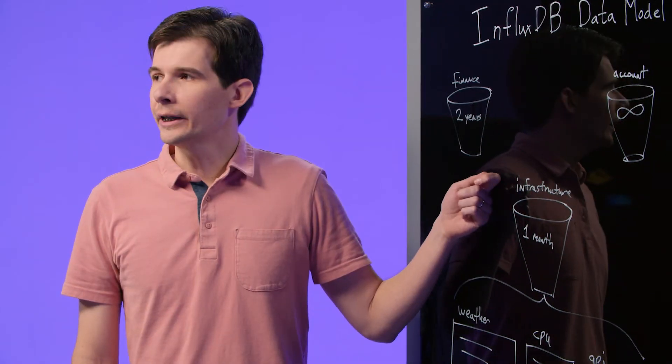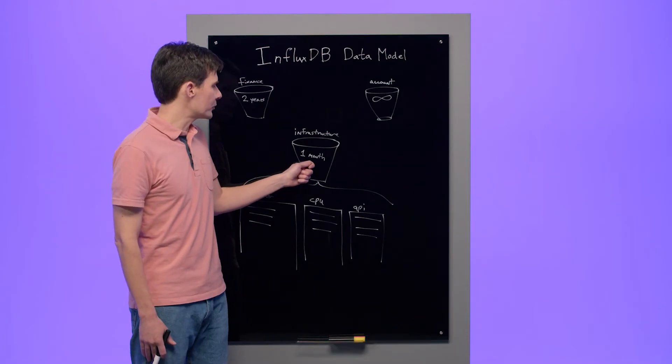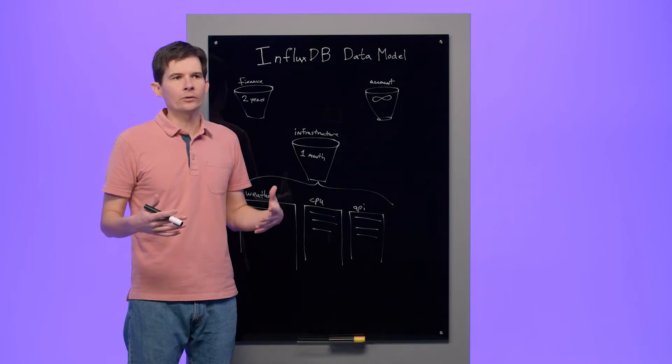This bucket is called infrastructure. We named it infrastructure because it stores information that's useful to help us keep our infrastructure healthy. We've assigned the infrastructure bucket a one-month retention policy. That's because one month is, we've decided, enough time for us to effectively monitor the health of our infrastructure.